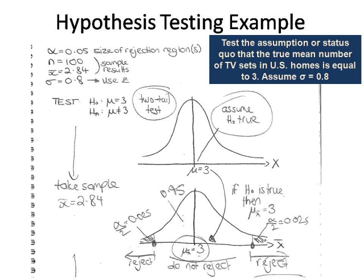We need sample information: sample size of 100 and a sample mean of 2.84 — so the sample average number of TV sets was 2.84. In terms of exams, I would give you any sample statistics you need, such as sample mean. We're going to assume sigma is known, and in fact we've been told it's 0.8. The fact that sigma is known tells me I'm going to be using Z. A little bit later we'll see that we have to use T if sigma is unknown.